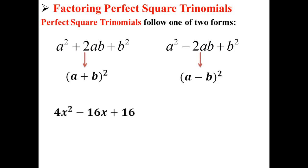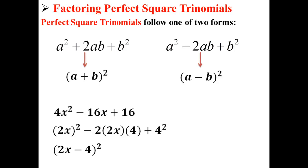Let's try this with an example. Here we have a perfect square trinomial: 4x squared minus 16x plus 16. We can rewrite it to be in the above form, so now we have 2x squared minus 2 times 2x times 4 plus 4 squared. Finally, it can be rewritten in the form 2x minus 4 squared. And now we've factored our perfect square trinomial.